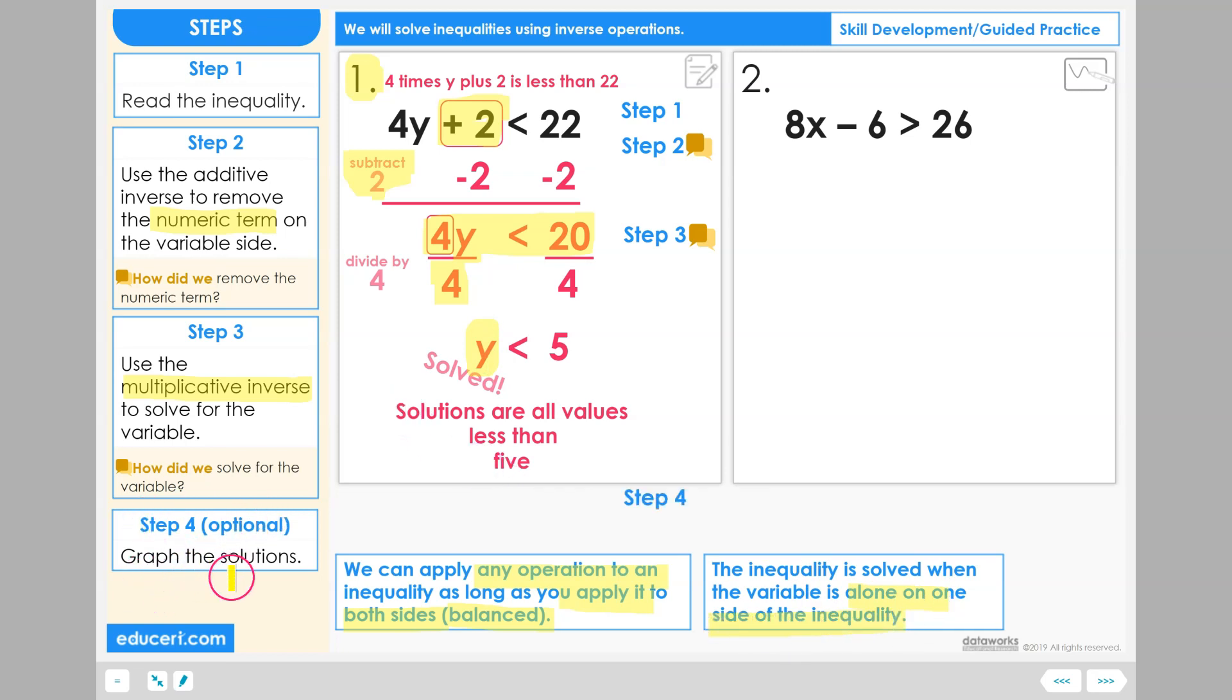Step 4 is optional. Graph the solution. So I'm going to do a quick graph here. First, you're going to want to draw your number line, and then put the value that's the starting point right in the middle of the number line. Now give a couple of numbers before and after this value, so maybe like a 3, 4, and a 6, 7, just to kind of show the starting point right in the middle here. And then let's do the correct circle type. 5 is not included in the solution, so 5 is going to have an open circle at this point. Then we're going to draw our solution arrow in the direction of all the less than values. And this would be my graph for all solutions, our values less than 5, and not including 5, that's why we have an open circle.